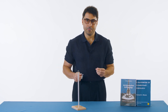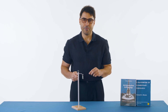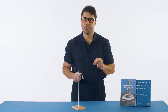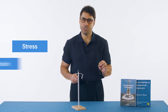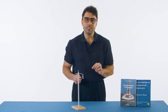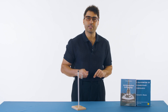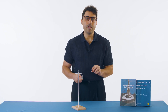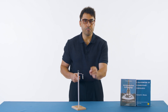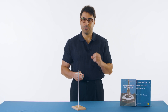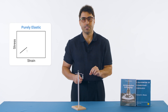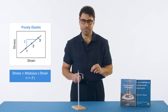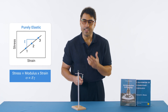In rheology, if we want to describe this behavior, we need to introduce two fundamental concepts: stress and strain. Stress is the force — from the weight in this case — applied per unit area. Strain is the relative change in shape or length that results from that stress. The constant that connects stress and strain is called the modulus — in this case, the elastic modulus.